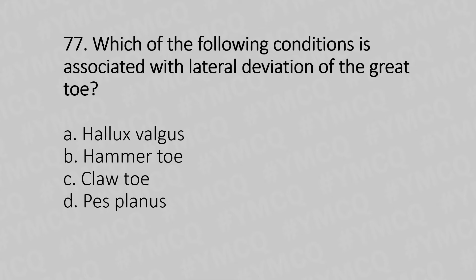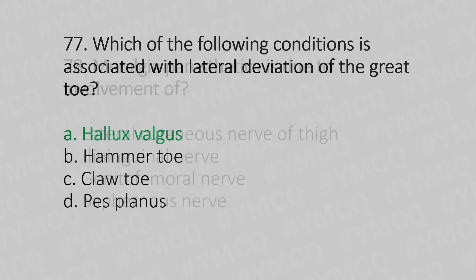Question 77: Which of the following conditions is associated with lateral deviation of the great toe — option A: hallux valgus, option B: hammer toe, option C: claw toe, option D: plantar fasciitis. The answer is option A: hallux valgus.